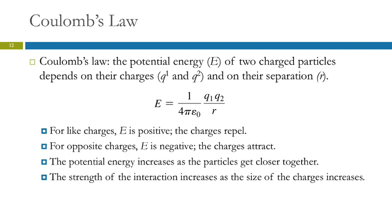Coulomb's Law is very helpful for understanding what's going on with charges. It describes the relationship between potential energy, the charges of the particles, and how far apart they are. The energy equals a constant times Q1 times Q2 divided by R. We can say the energy is proportional to Q1 times Q2, the charges on each particle, divided by R, the distance between the charges.